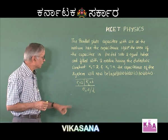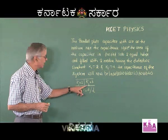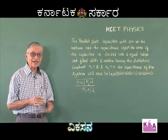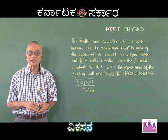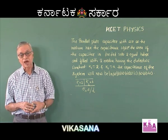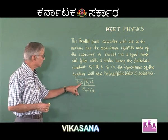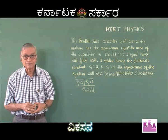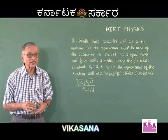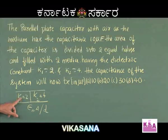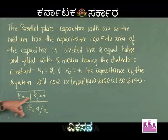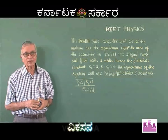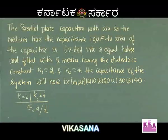Note that similarly charged plates are connected together — that is the criterion for parallel connection. On account of that reason, these two capacitors should be assumed to be connected in parallel. If connected in parallel: 10 microfarad plus 20 microfarad equals 30 microfarad. Therefore, option C is the correct answer.